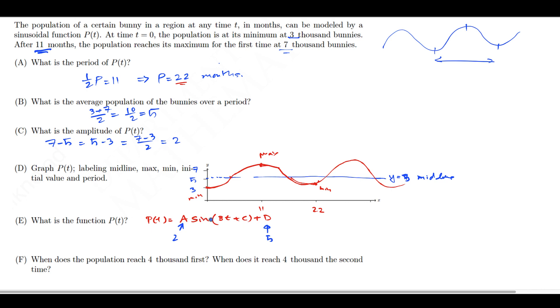If I plug in 0 for T, T equal to 0 gives sine of C. So the initial value is equal to 3. So I can solve for C: 2 sine of C plus 5 equals 3, so sine of C is equal to negative 1, and therefore C should be equal to 3π/2.